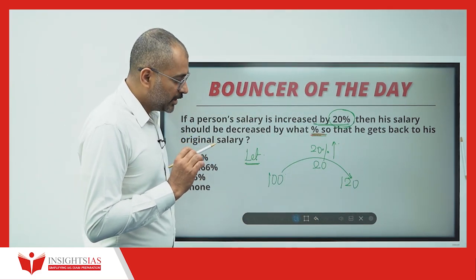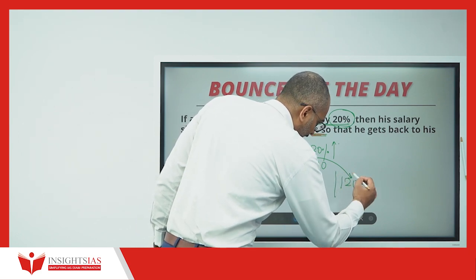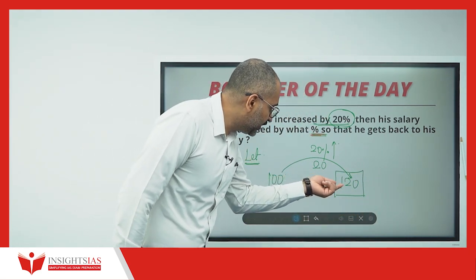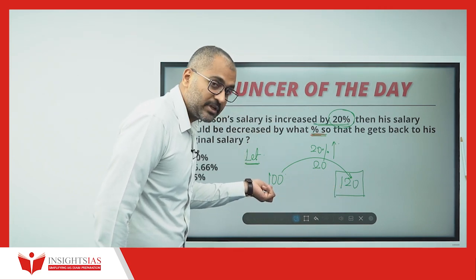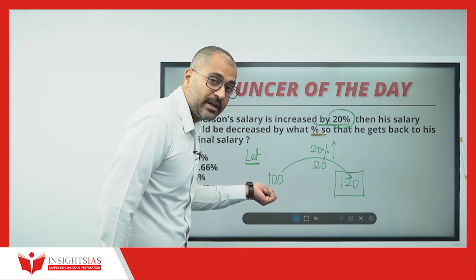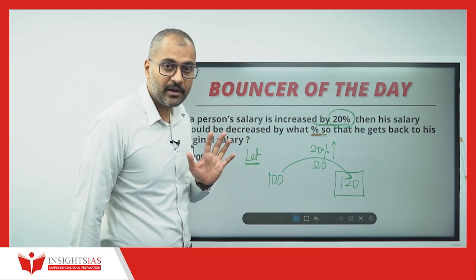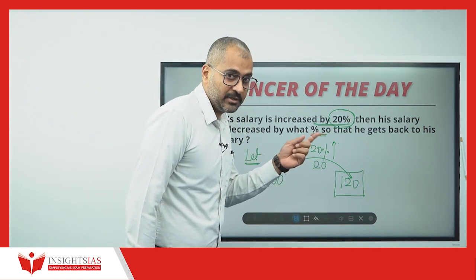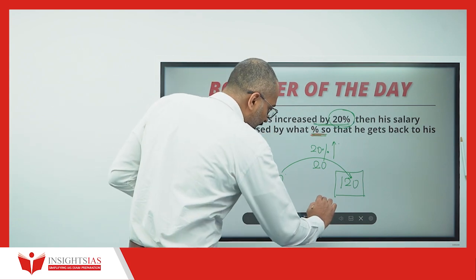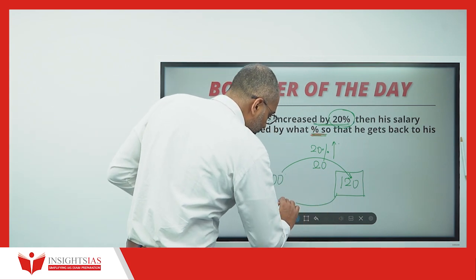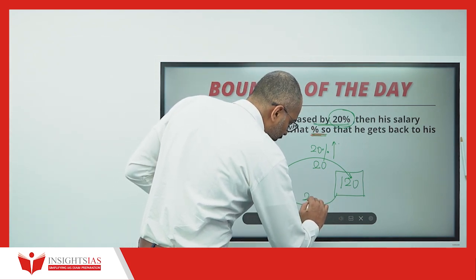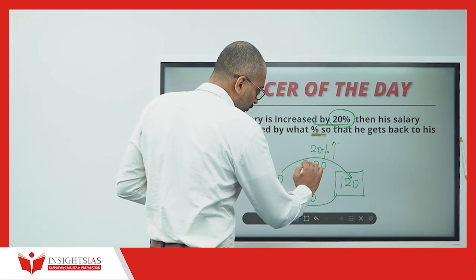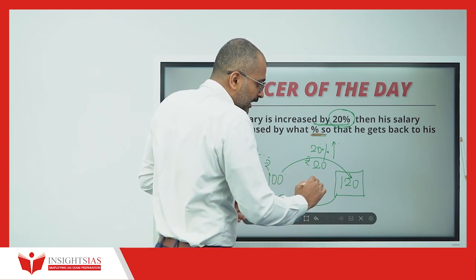Now his actual salary becomes 120. You have to reduce this 120 by a certain percentage so he gets back to his original salary of 100. Most of you might be thinking the answer is 20%, but look here. When I reduce, I have to reduce 20 rupees. I assumed the salary as 100, so 20% is 20 rupees. If I increase, the salary becomes 120.